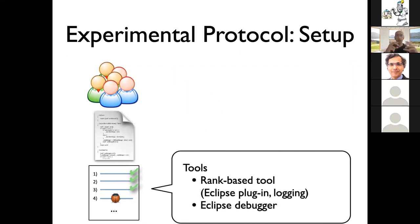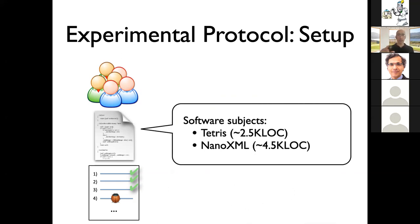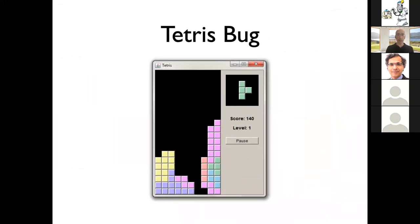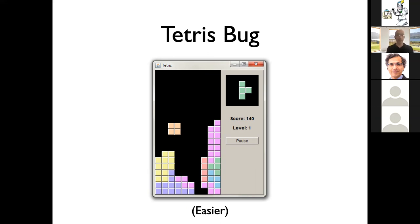In terms of tools, the treatment was the rank-based Eclipse plugin with logging, and the baseline was the Eclipse debugger or whatever the developers wanted to use, without access to the ranking tool. We had two programs: Tetris and nanoXML. The Tetris bug was that rotating a block was also moving it sideways — we considered this easy because the game is well understood. The nanoXML bug involved a parser crash on a specific XML document — considered harder because parsers are more complex and the issue is less obvious.